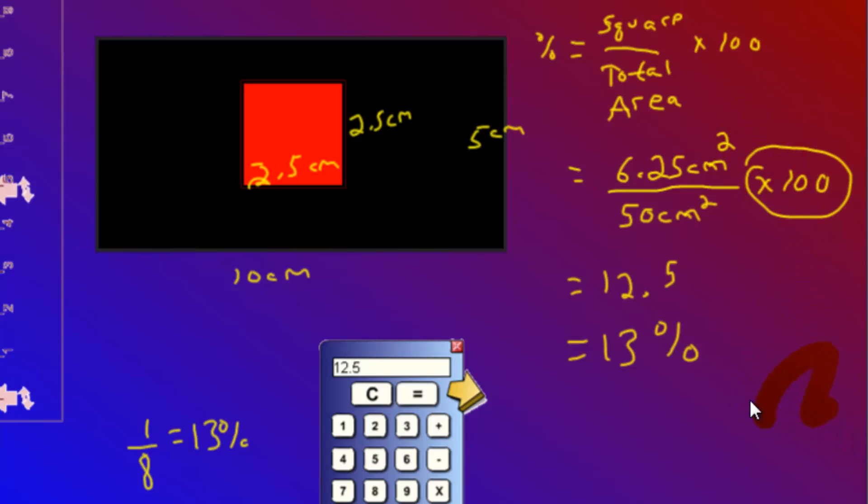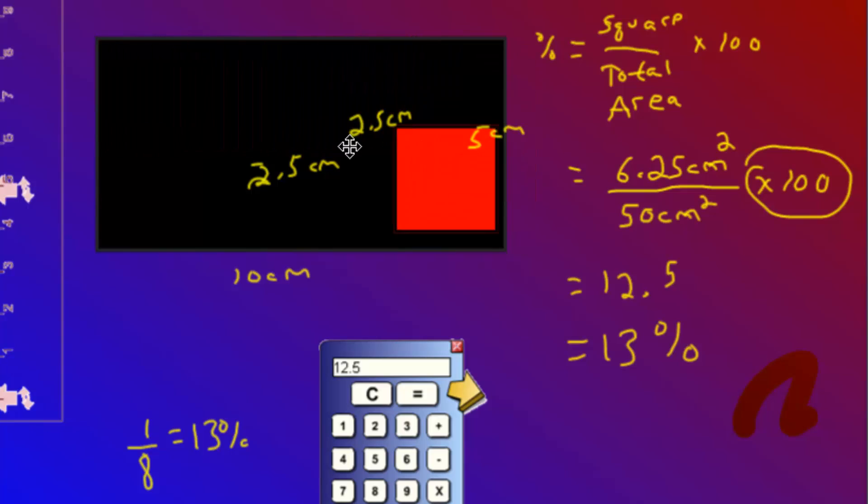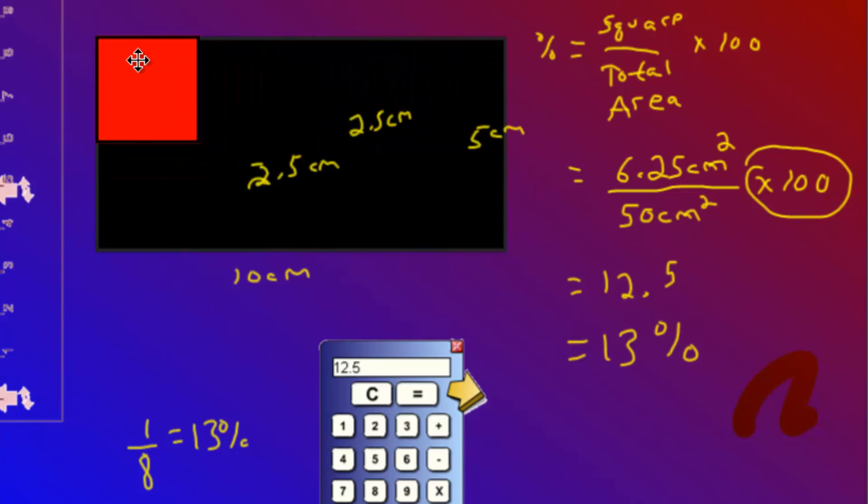And all we did to do that was we just counted squares. Where did these things come from? All we did was we looked, we said 1, 2, 3, 4, 5, 6, 7, 8. 1 out of 8 is 13%. Now it doesn't always work out this nicely. In this example, it did. And no, I did not plan it that way. It just happened by fluke. But always show your work. Always show your calculations.